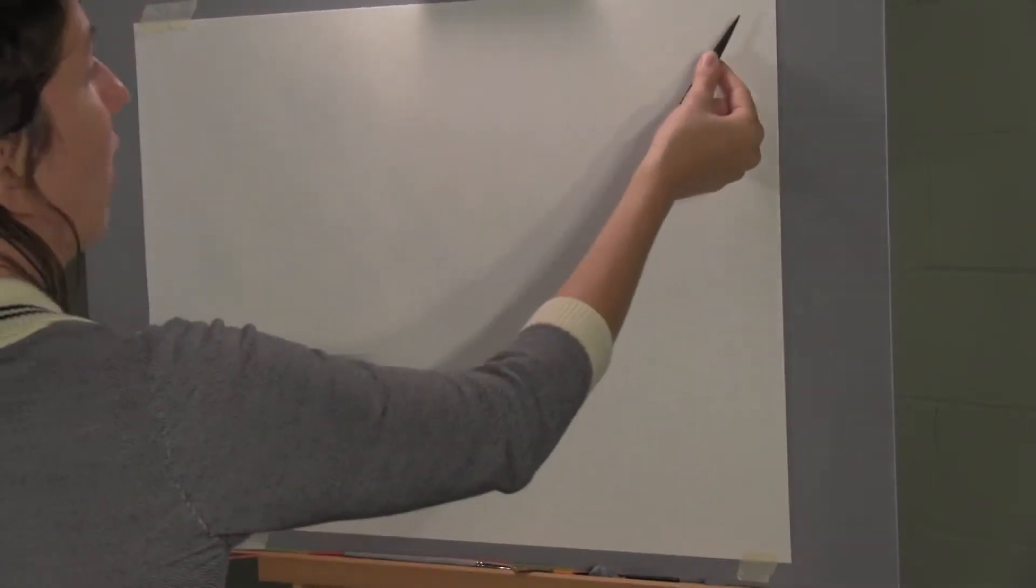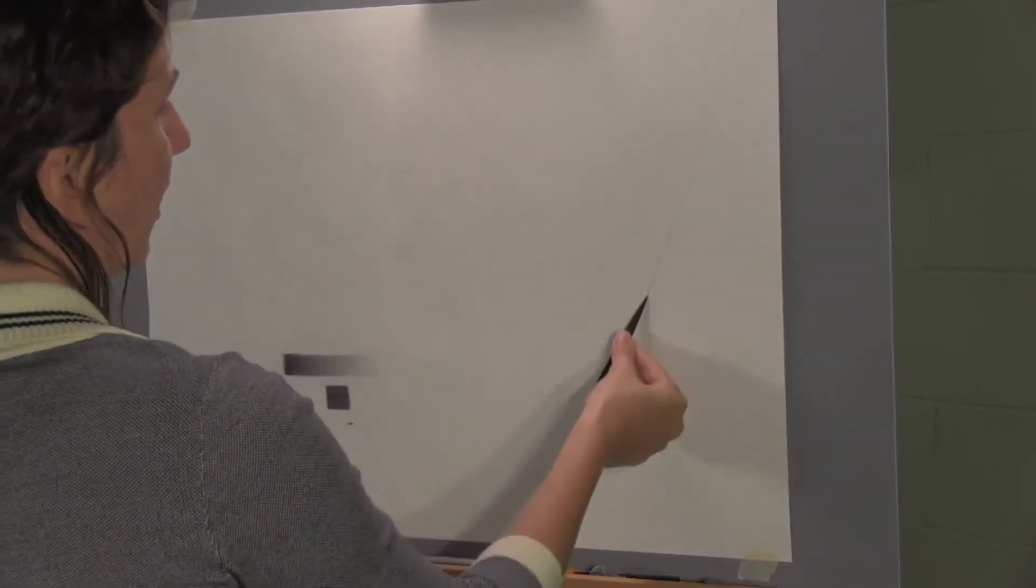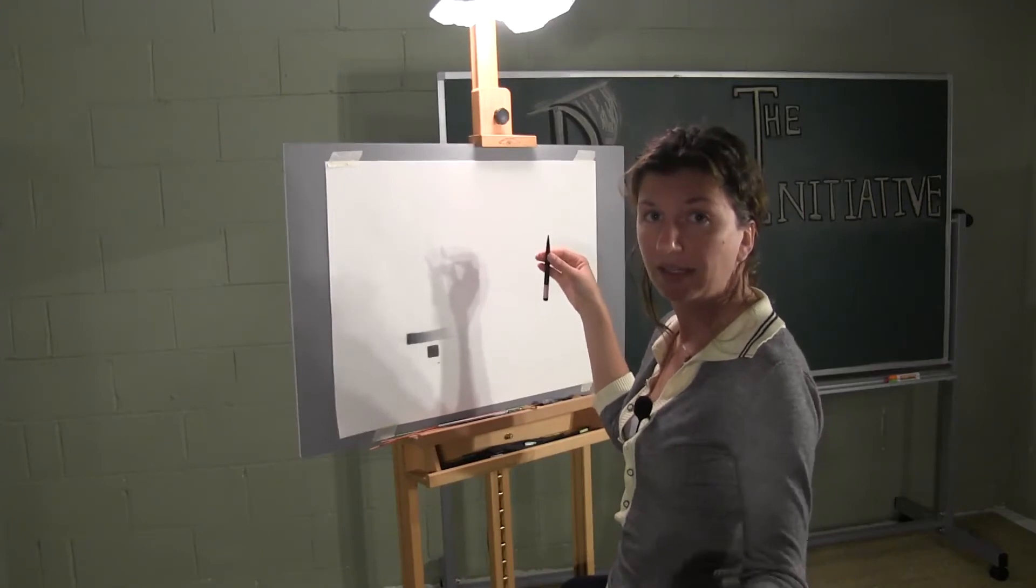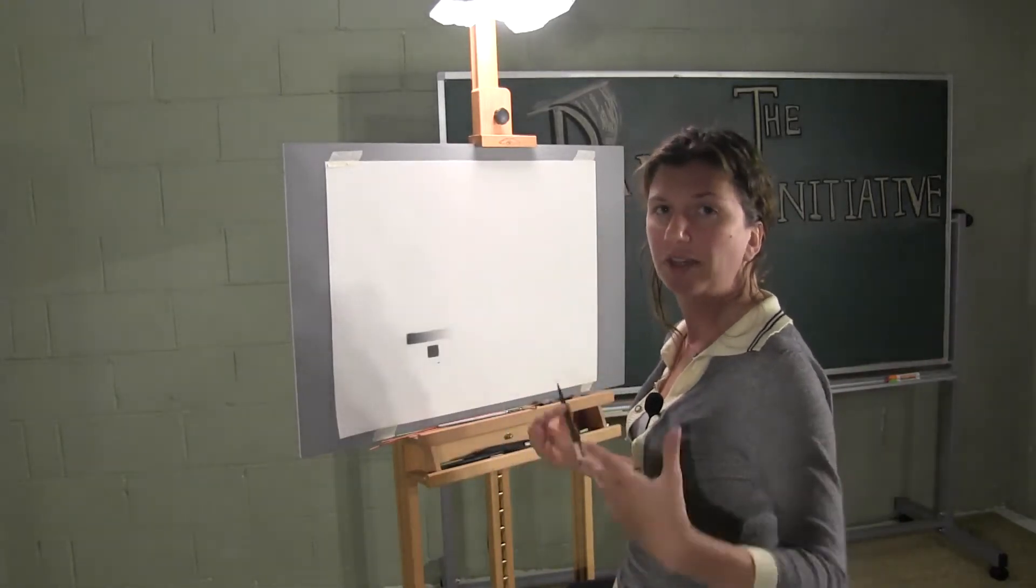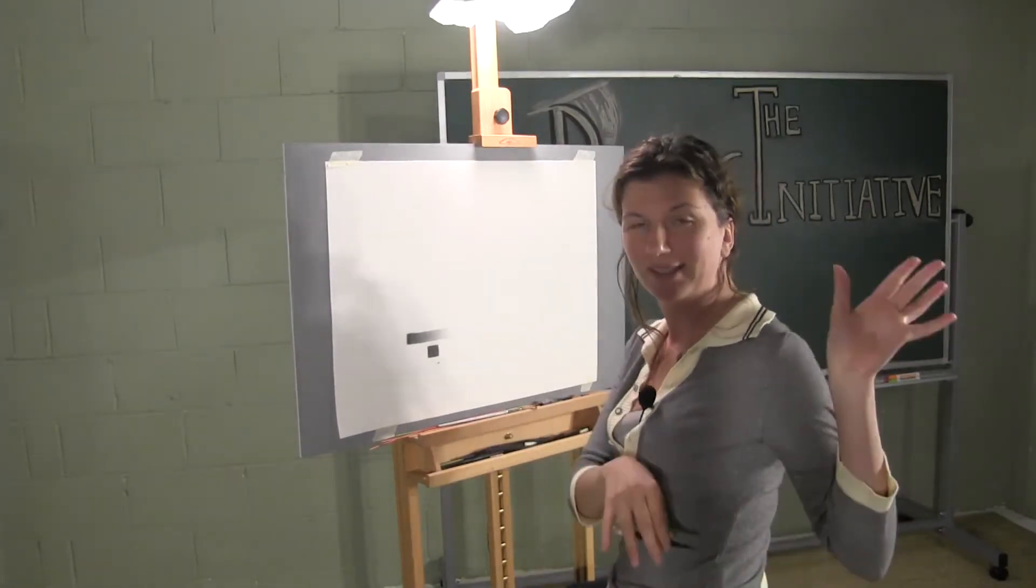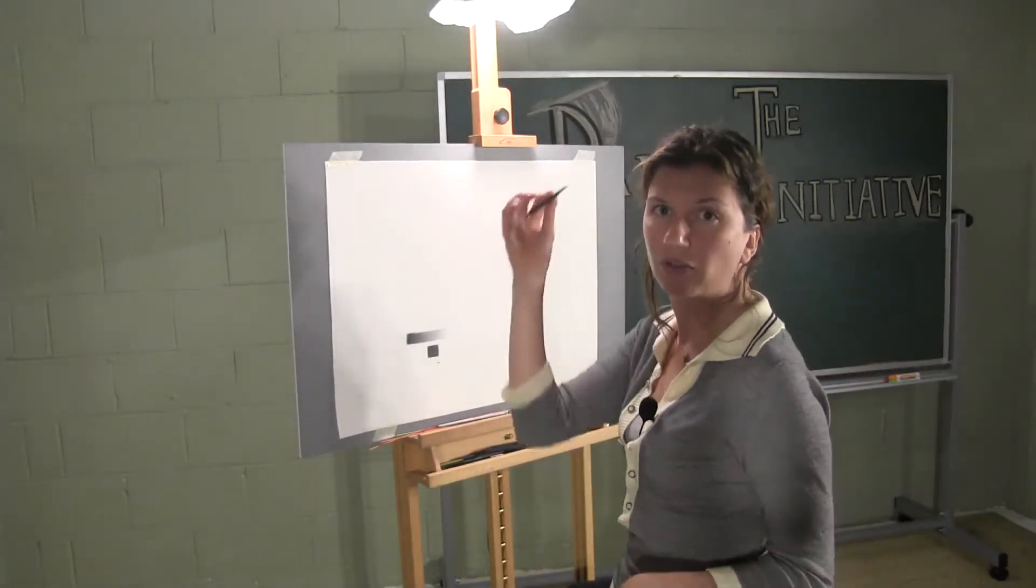What this does is it helps stabilize your hand so that as you draw, you can drag your fingernail around. Now, I'm going to draw heavier lines so that you can see them. Always in atelier training, especially in the beginning stages, you want to keep your lines light, but for purposes of this lesson, I'm going to draw darker lines.